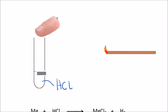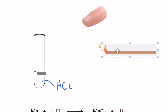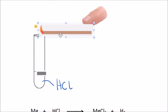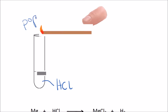Once enough pressure had built up, you probably removed your thumb and immediately placed a lit splint over the top of the test tube. And you would have heard a squeaky pop sound.